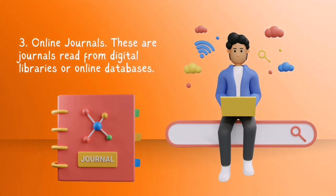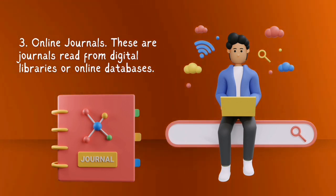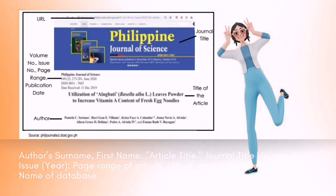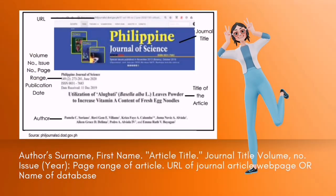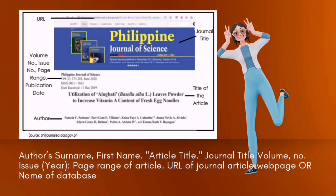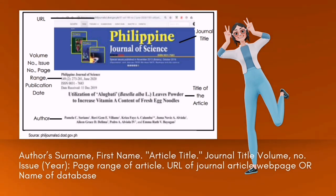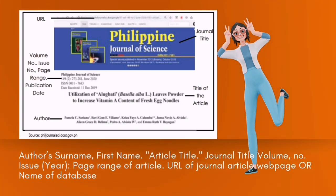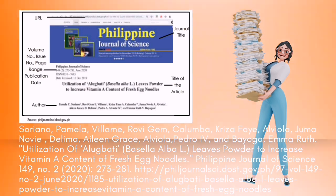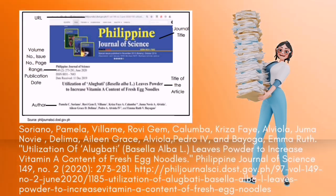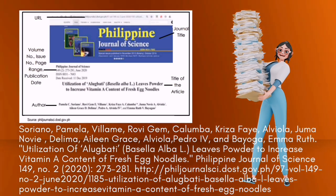Three. Online Journals — these are journals read from digital libraries or online databases. This is the sample format of writing an online journal bibliography: author's surname, first name, article title, journal title, volume number, issue, year, page range of article, URL of journal article web page, or name of database. Do not forget to follow the correct punctuation marks just like the rest of the examples.